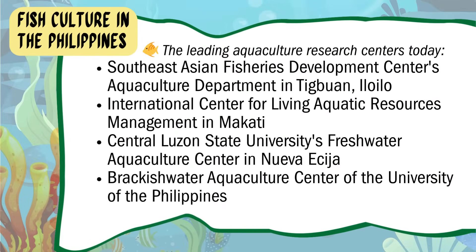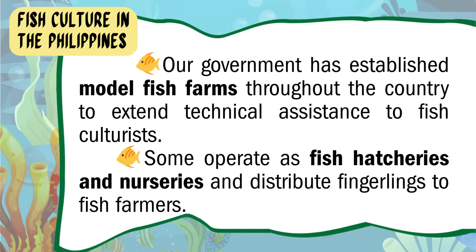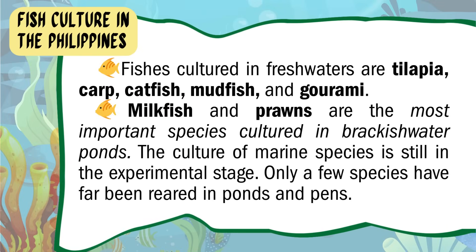Among the leading aquaculture research centers today are: the Southeast Asian Fisheries Development Center's Aquaculture Department in Tigbauan, Iloilo; the International Center for Living Aquatic Resources Management in Makati; the Central Luzon State University's Freshwater Aquaculture Center in Nueva Ecija; and the Brackish Water Aquaculture Center of the University of the Philippines. The government has established model fish farms throughout the country to extend technical assistance to fish culturists, some operating as fish hatcheries and nurseries distributing fingerlings to fish farmers. Fishes cultured in fresh waters are tilapia, carp, catfish, mudfish, and gourami. Milkfish and prawns are the most important species cultured in brackish water ponds. The culture of marine species is still in the experimental stage, with only a few species reared in ponds and pens.